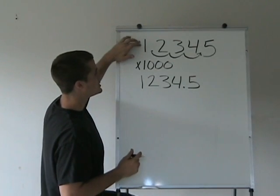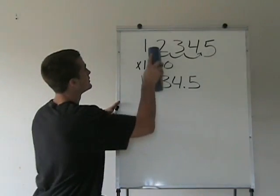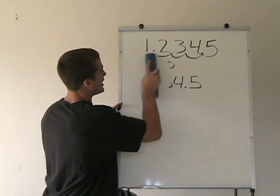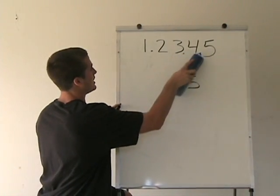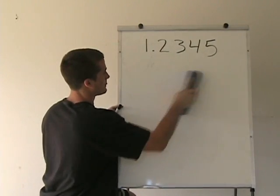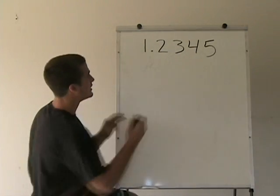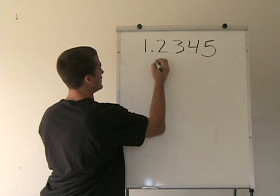If we took the original decimal up here, and we divided by a thousand, so now we're going to divide by a thousand.